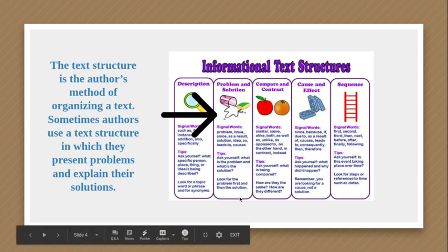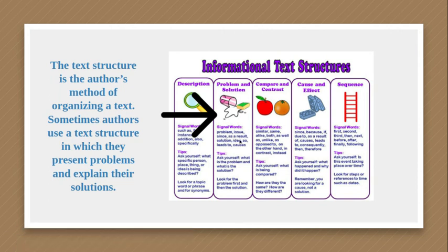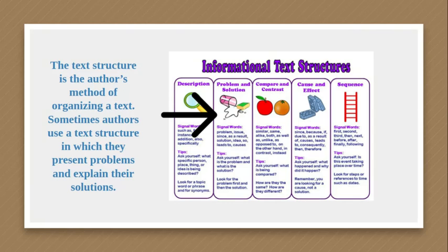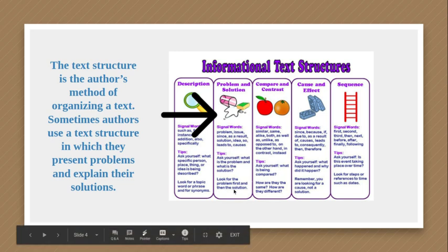Some signal words you might notice in Problem and Solution structure are: problem or issue, since, as a result, solution, idea, so, leads to, and causes. Some tips for this text structure: ask yourself what is the problem and what is the solution? Look for the problem first and then the solution.